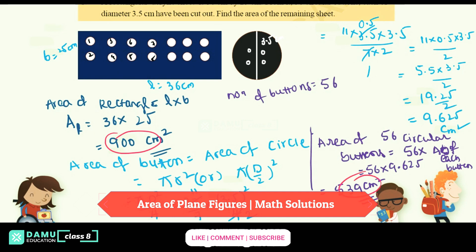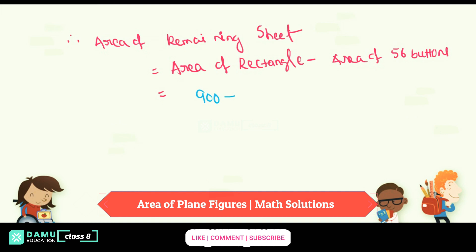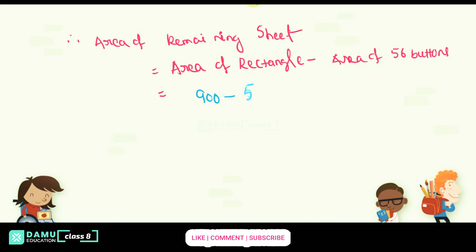So what is that, we are getting 539. So 900 minus 539, we will get 361 centimeter square. Thanks for watching, please subscribe.